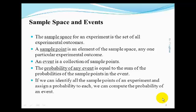Therefore, the probability of our event that I roll an even number would be equal to the sum of the probability that I roll a 2, plus the probability that I roll a 4, plus the probability that I roll a 6, since these are the 3 sample points that are contained in the event.